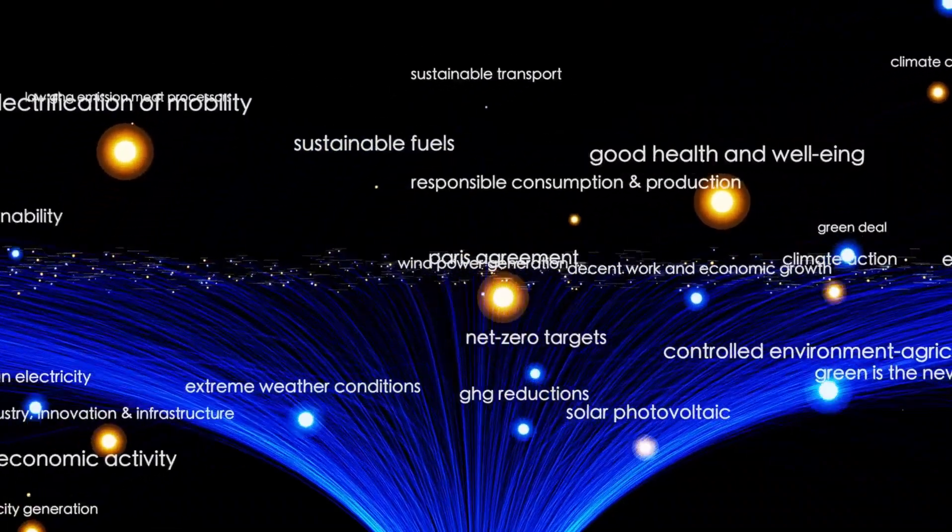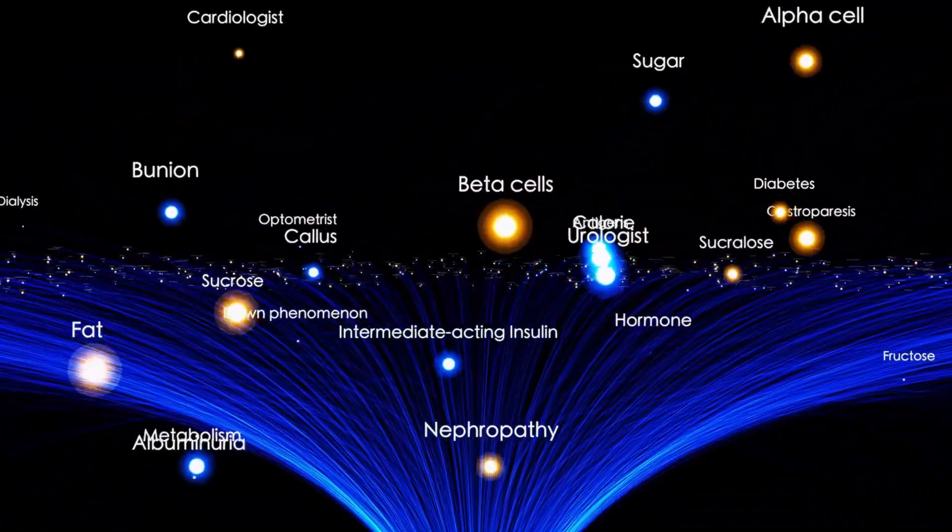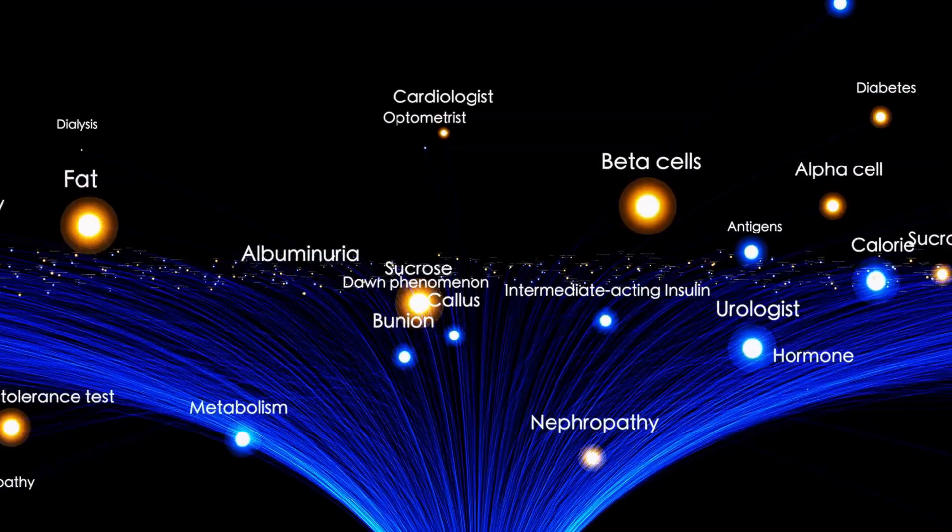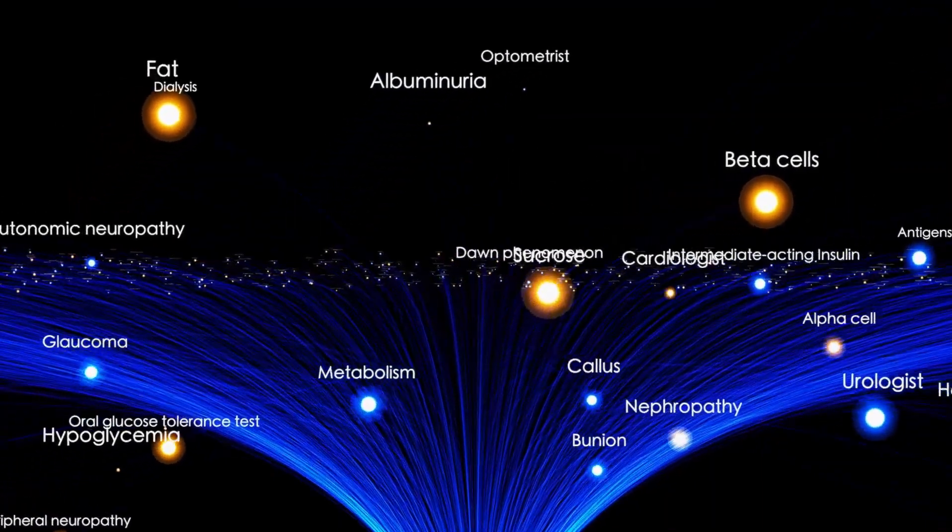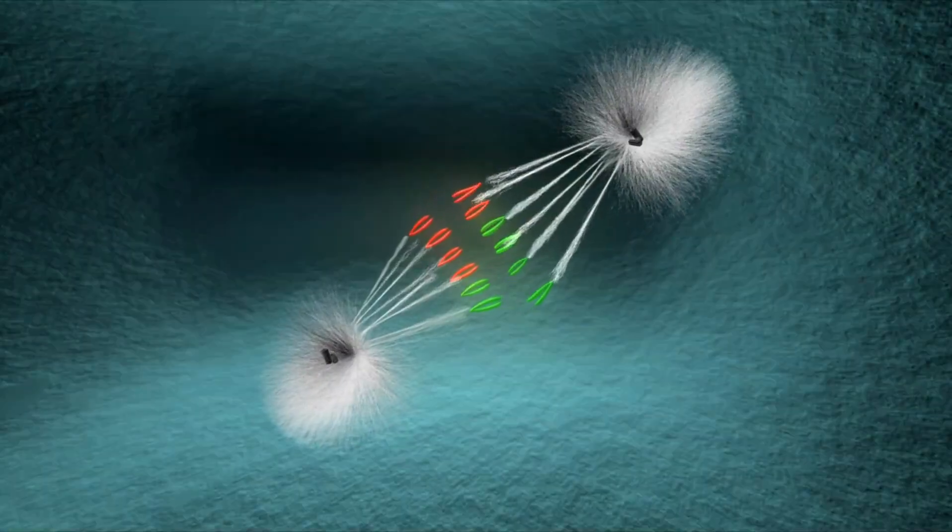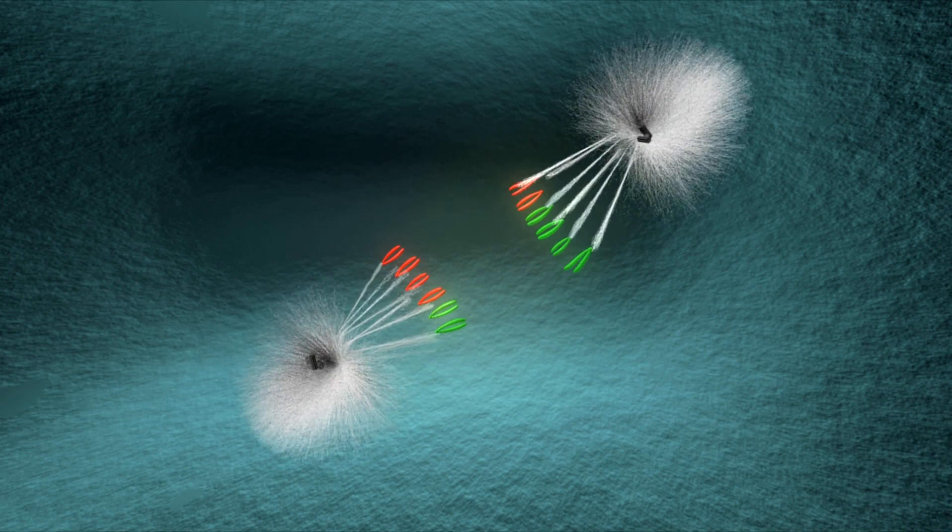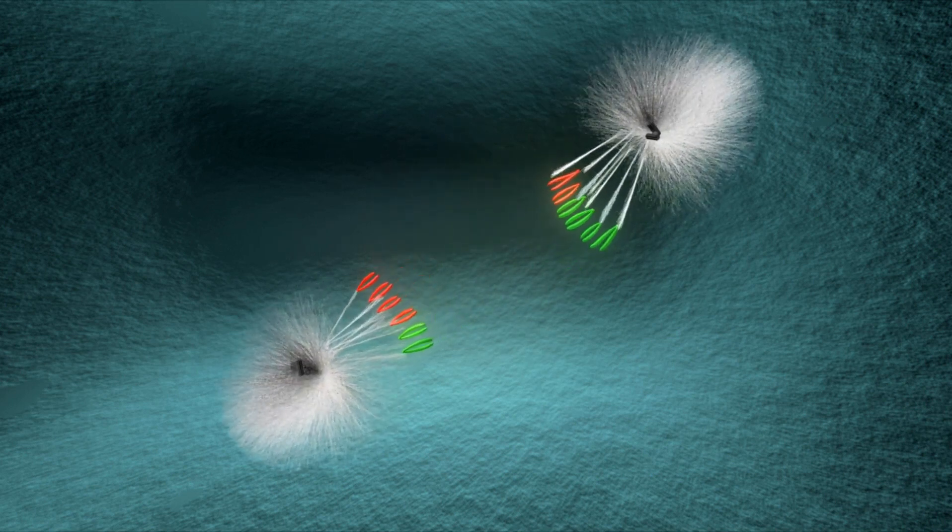Voyager 1 confirmed its crossing when it detected a solar eruption that caused surrounding electrons to vibrate. The data revealed that interstellar space is denser than regions near the sun, while the heliosphere's outer edge is much less dense.